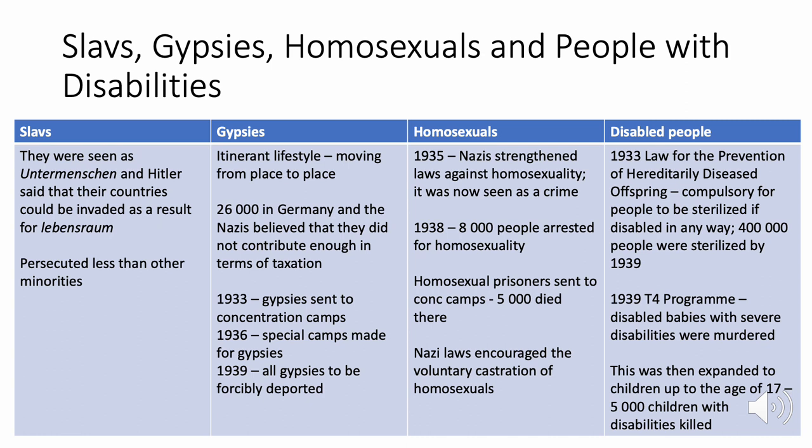Four groups bore the brunt of Nazi hatred in addition to Jewish people. Slavs were seen as Untermenschen and Hitler wanted to conquer their lands for Lebensraum — living space — though they were persecuted less than other minorities. Gypsies, who followed an itinerant lifestyle, numbered only 26,000 but from 1933 were sent to concentration camps; by 1936 special camps were made for them, and from 1939 the aim was to deport all Gypsies. Many Gypsies died during the Holocaust.